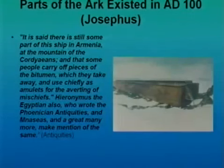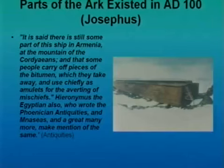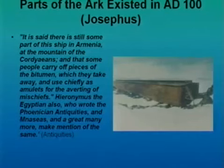According to Josephus, who was a Jewish historian of the first century, parts of Noah's Ark still existed in the Mount Ararat range. He says in his book Antiquities, 'It is said there is still some part of the ship in Armenia, at the mountain of the Chordians, and that some people carry off pieces of the bitumen which they take away and use chiefly as amulets.' Hieronymus the Egyptian, who wrote the Phoenician Antiquities, and many more make mention of the same. Everyone knew about the remains of Noah's Ark in the Mount Ararat range, just as the Bible said.